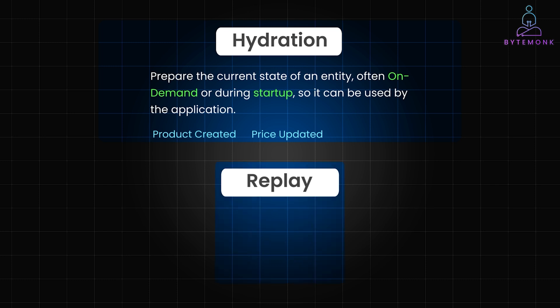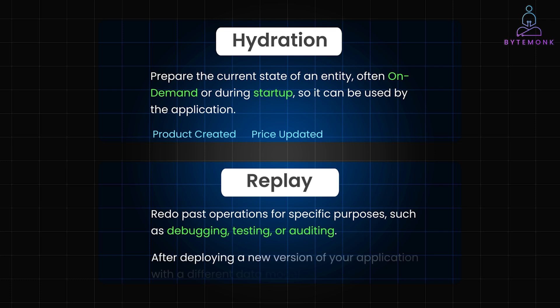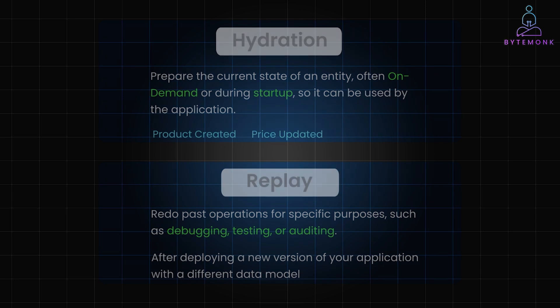Replay refers to processing past events to regenerate the entire state of the system or to redo past operations for specific purposes such as debugging, testing, or auditing. Replay is often used when you need to rerun events either to validate changes or to migrate data. For example, after deploying a new version of your application with a different data model, you might need to replay all events from the beginning to generate the current state according to the new model.